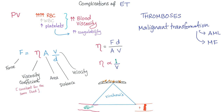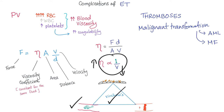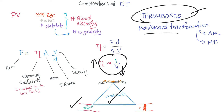Complications of essential thrombocytosis: lots of platelets lead to increased blood viscosity and hypercoagulability. According to physics, increased viscosity means decreased blood velocity, which means blood stasis — Virchow's triad — which means thrombosis. Thrombosis is therefore common in ET, as is malignant transformation into AML or myelofibrosis.